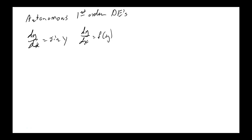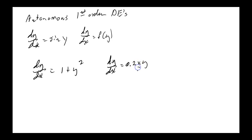Here are a few other examples. dy/dx equals 1 plus y² is a first order autonomous equation — no x on the right-hand side. Note it doesn't have to be linear, just autonomous. On the other hand, dy/dx equals 0.2xy is not autonomous because it has x dependence on the right-hand side. Going back to Section 1.3, dA/dt equals kA — those were all autonomous.